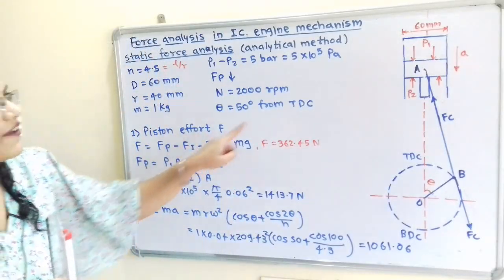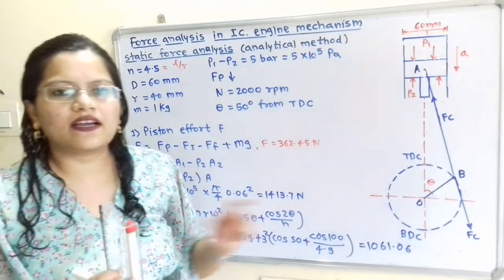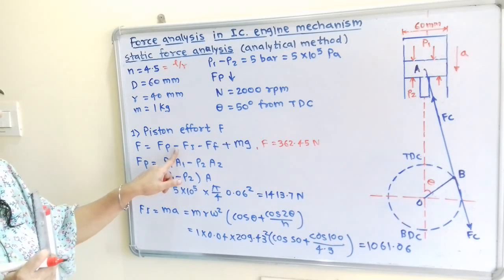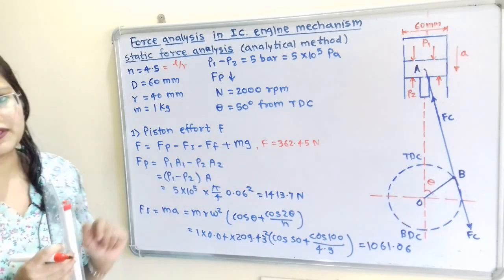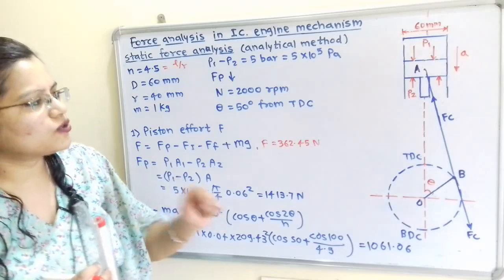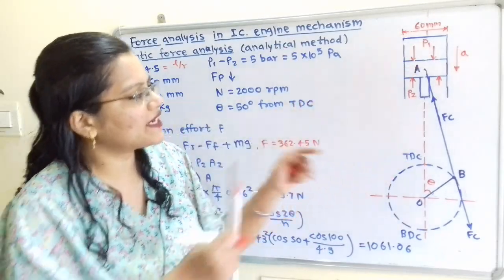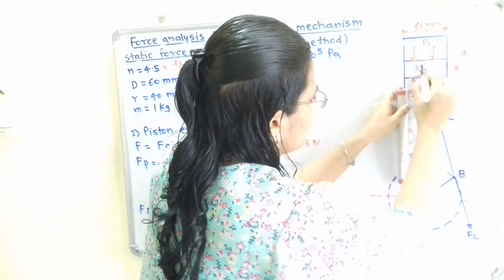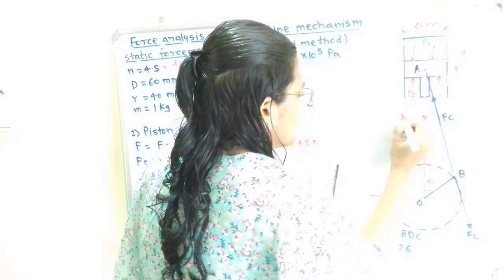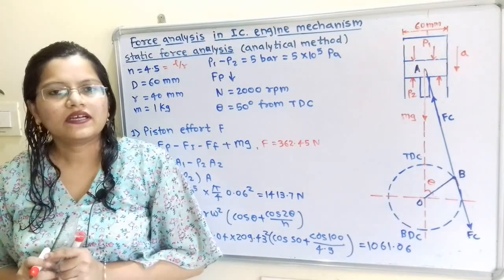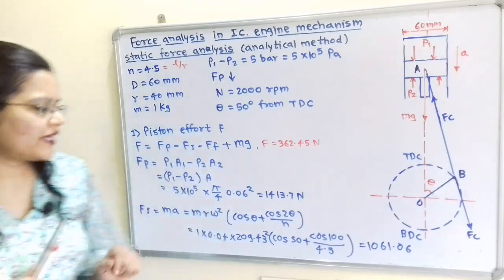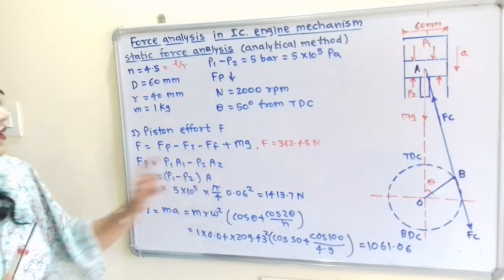We have to calculate piston effort F. For a vertical engine, the formula is: F = Fp − Fi − Ff + Mg. The weight of the reciprocating parts M acts in the vertically downward direction, so Mg is added. We will first calculate Fp, the force due to gas pressure. The formula is Fp = P1·A1 − P2·A2.